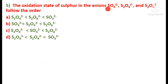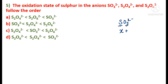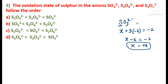Next question: the oxidation state of sulfur in SO₃²⁻, S₂O₄²⁻, and S₂O₆²⁻ — find the increasing order. For SO₃²⁻: let sulfur = X, with 3 oxygen atoms each at −2 and overall charge −2, so X − 6 = −2, giving X = +4. Calculating for S₂O₄²⁻ gives +3, and for S₂O₆²⁻ gives +5. The increasing order is S₂O₄²⁻ (+3) < SO₃²⁻ (+4) < S₂O₆²⁻ (+5). This matches option C.